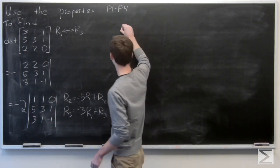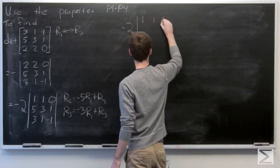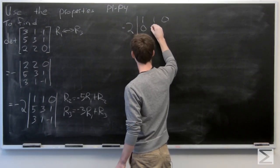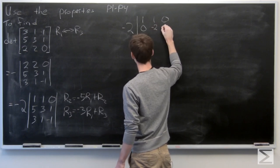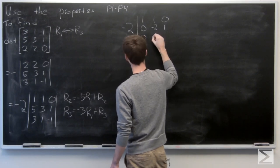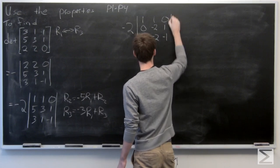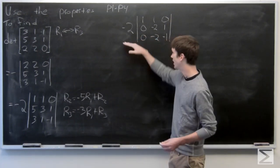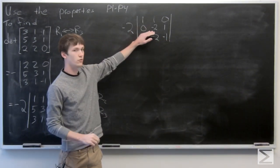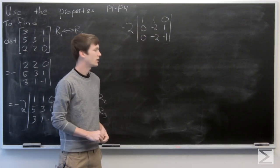So our determinant changes to negative 2 times: our first row remains the same. And then our second row is changed to 0, negative 2, 1. And our third row is 0, negative 2, negative 1.